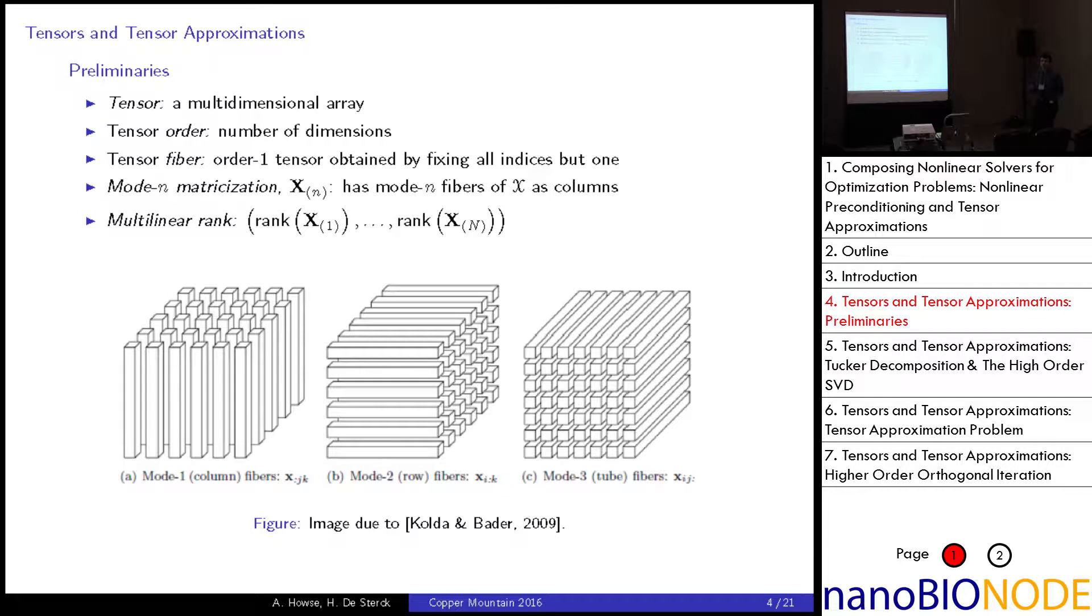So a tensor for my purposes is simply a multi-dimensional array. I'll use the script X to indicate it. The tensor order is number of dimensions. For purposes here you can think of a three-dimensional array, a cube or a box of numbers. A tensor fiber is an order one tensor or a vector with a particular orientation, which we obtain by fixing all indices but one. Here's a very popular image from a review paper on tensors, illustrating column, row, and tube fibers.